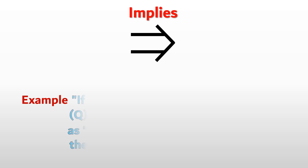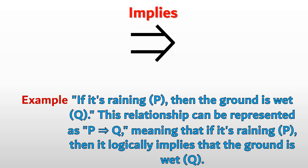Next, Implies. Example: if it is raining (p), then the ground is wet (q). This relationship can be represented as p implies q, meaning that if it is raining (p), then it logically implies that the ground is wet (q).